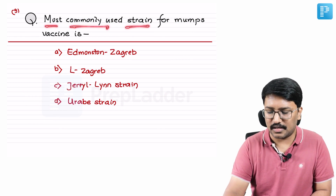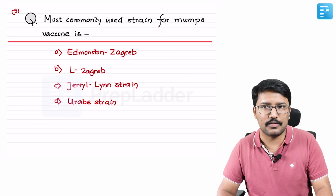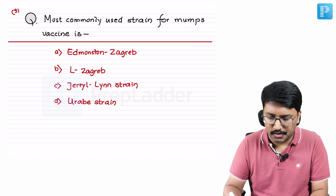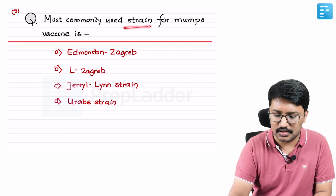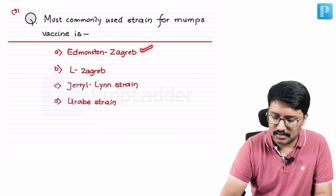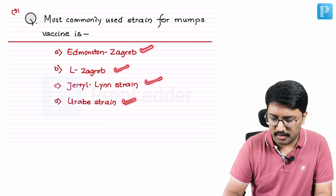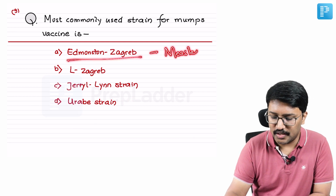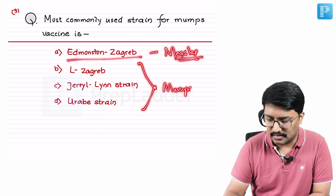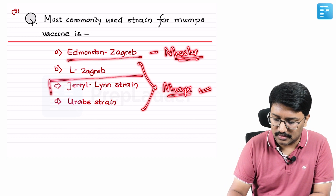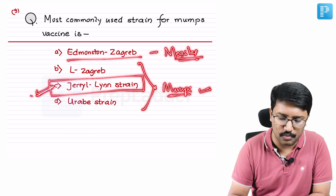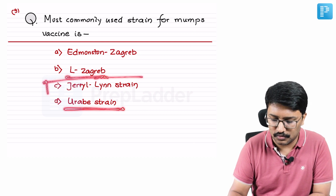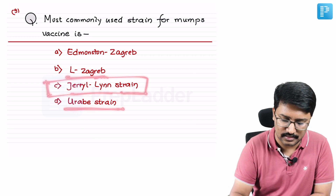Question nine: most commonly used strain for mumps vaccine. Options are Edmonston and Zagreb, L-Zagreb, Jeryl Lynn, and Urabe strain. Edmonston and Zagreb is used for measles vaccine. The remaining are mumps virus strains. Among these, the Jeryl Lynn strain is the most commonly used standard strain for mumps vaccine development, though some vaccines use the Urabe or L-Zagreb strains. Right answer: option C — Jeryl Lynn strain.